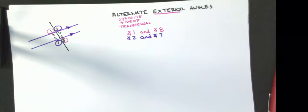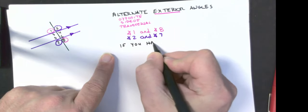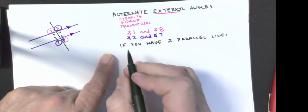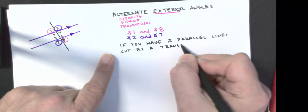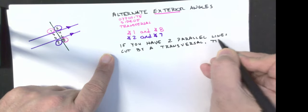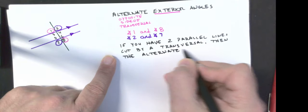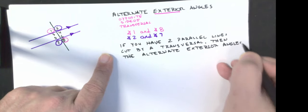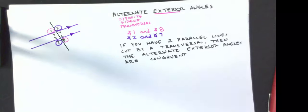The fact we know about these is similar to corresponding angles: if you have two parallel lines cut by a transversal, then the alternate exterior angles are congruent. That means angle 1 has the same measure as angle 8, and angle 2 has the same measure as angle 7.